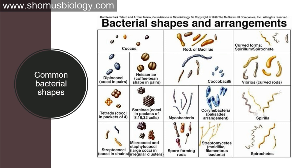We can call bacteria coccus or bacillus, and then depending on how many stick together, they are termed differently — diplococci, triplococcus, and so on. A single round spherical bacterium is a coccus; when two stick together we call them a pair of cocci — diplococci. The plural of coccus is cocci, not coccuses. There are also coffee-bean-shaped cocci in pairs, known as Neisseria.